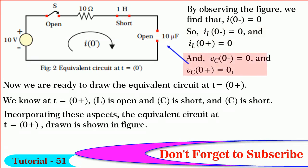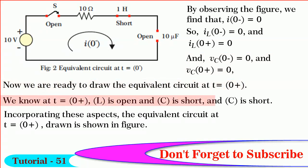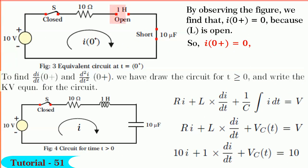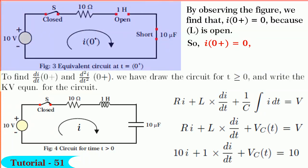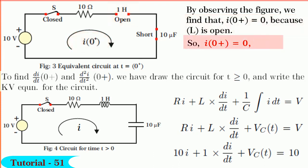Further, vc(0-) equals 0 and vc(0+) equals 0. Now we are ready to draw the equivalent circuit at t equals 0 plus. At t equals 0 plus, L is open and C is short and the switch is closed. The equivalent circuit at t equals 0 plus is shown in figure. We find that i(0+) equals 0 because L is open. So i(0+) equals 0 is the first answer we obtained.